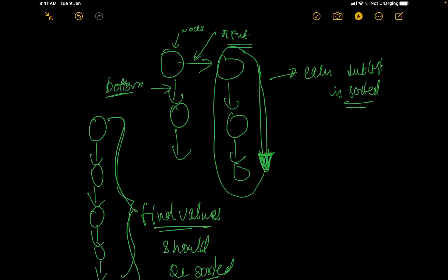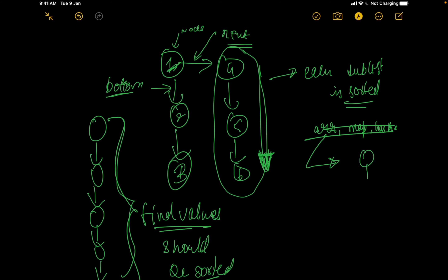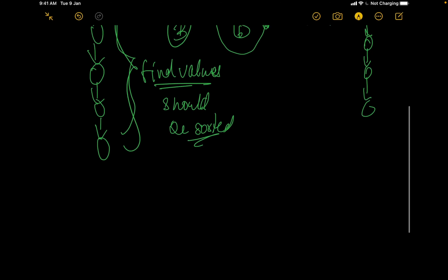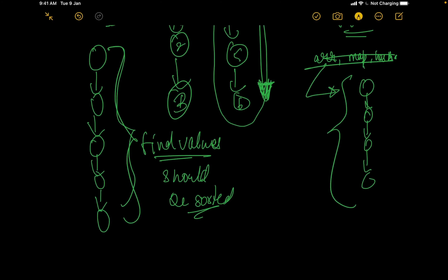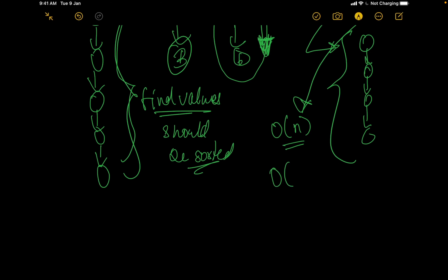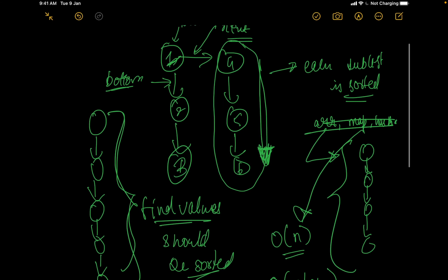Let's talk about a naive approach. A naive approach is that you can take all of these elements — let's say there are 6 elements — store all of them in a data structure. You can take an array, a map, or a hash map, whatever you want, and then use that to reconstruct the list. The time complexity for this: we have to store values in an array or hash map first, which takes O(n) space, and then we perform sorting, which takes O(n log n) time complexity.